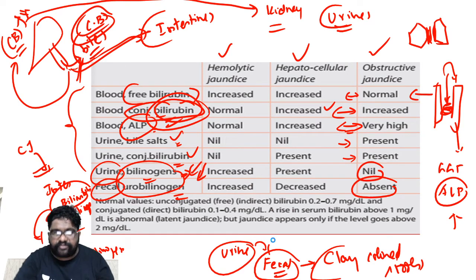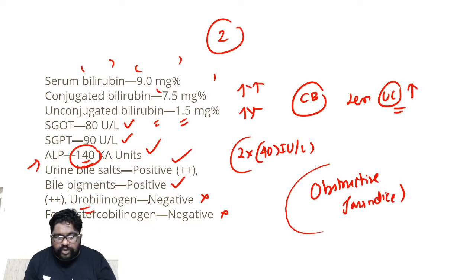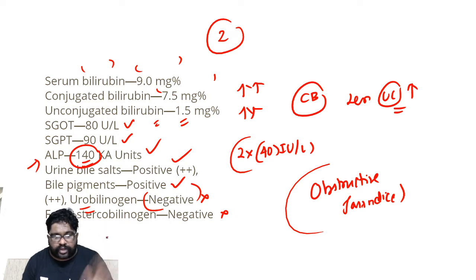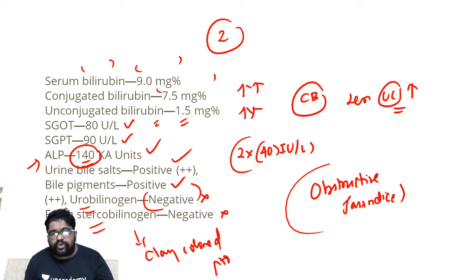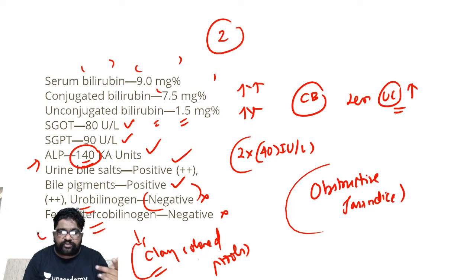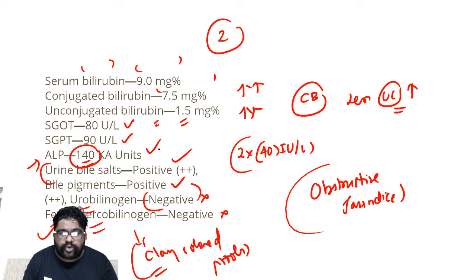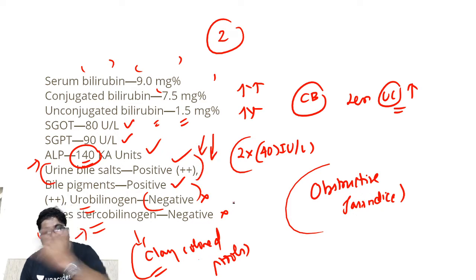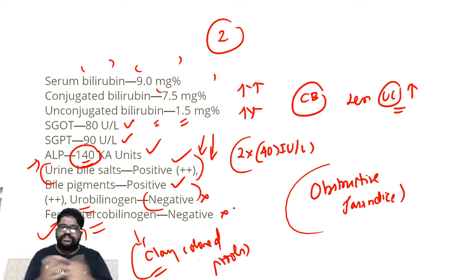Clay-colored stools are an indication of obstructive jaundice. Urobilinogen is negative — that is not giving any color to the urine. But fecal stercobilinogen is negative, which is why you have clay-colored stools. Whenever you look at these questions, you should identify clay-colored stools as part of your clinical or investigative examination. Urine bile salts are positive because they went through the blood, into the kidney, into the urine. This is how we crack an obstructive jaundice case.